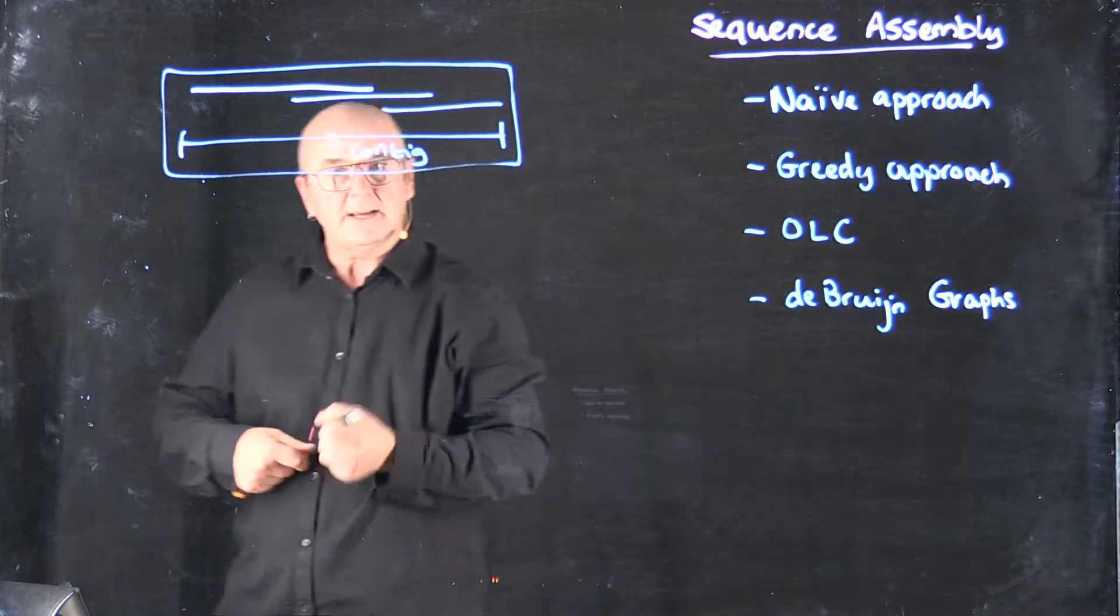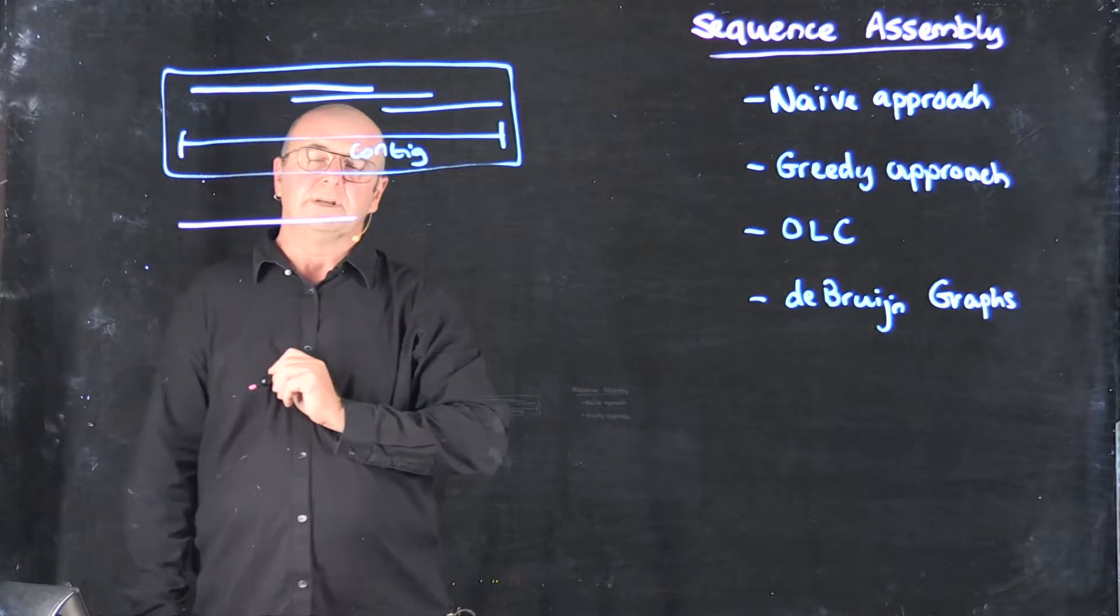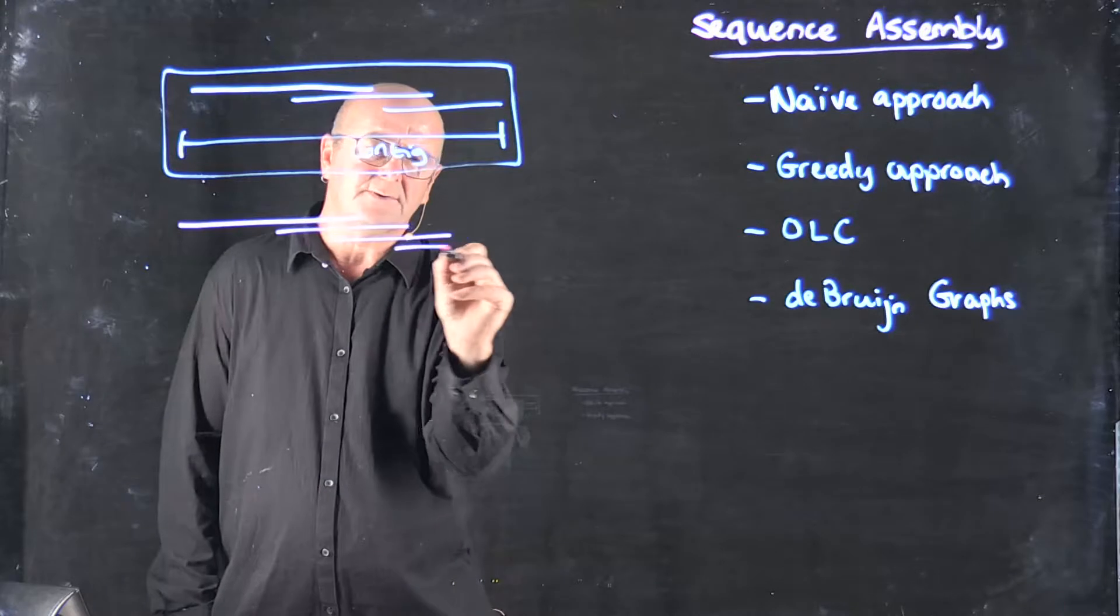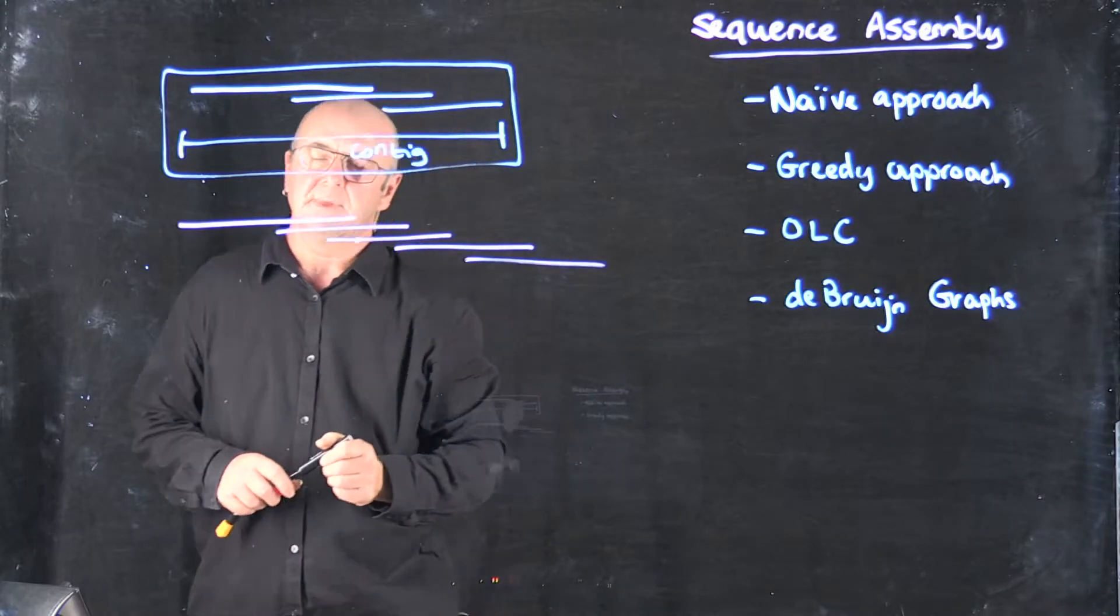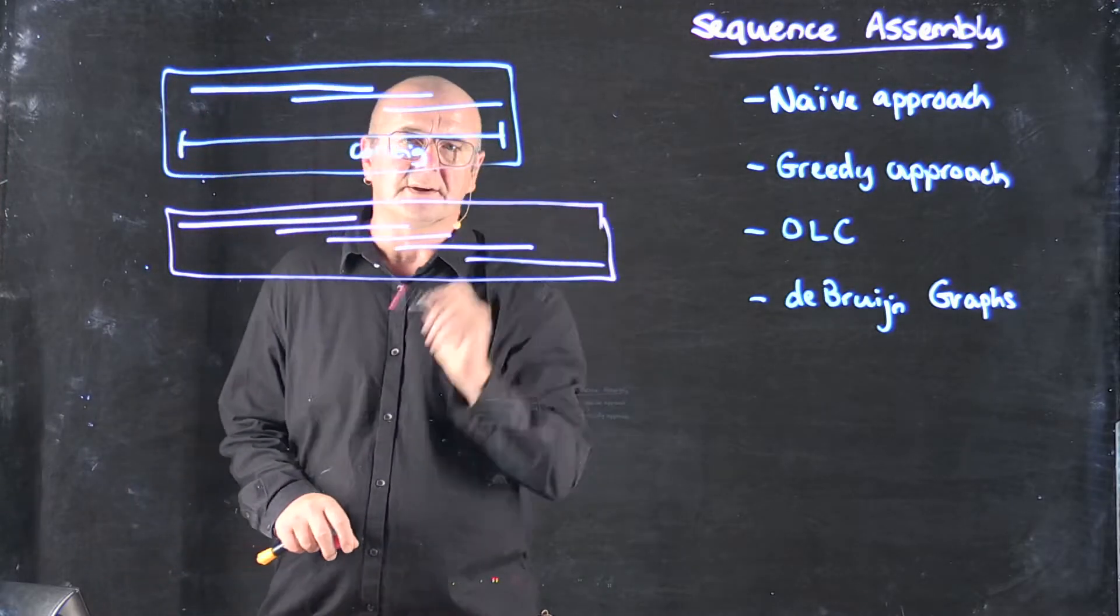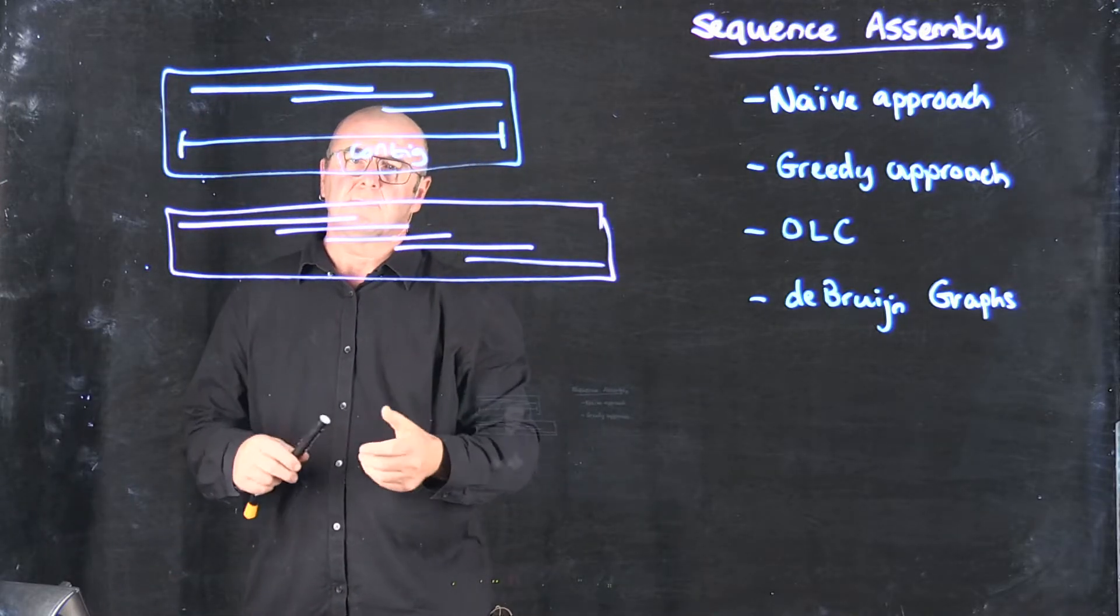Now we go to the next sequence, maybe the second sequence in the file. We take that sequence, we match it to every other sequence in our file. We take those, once we've got a match, we say, okay, we have another contig, and we're done.